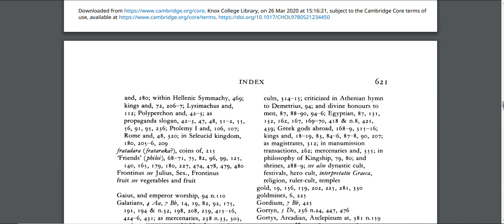Still in the heading gods, subheading cults, discussion of that is on pages 314 to 15 in this book. Sometimes the index headings give you what we call 'see also' references at the end. So in this example, see also: dynastic cult, festivals, hero cult, etc. These are other suggested headings that you could look under in the index.